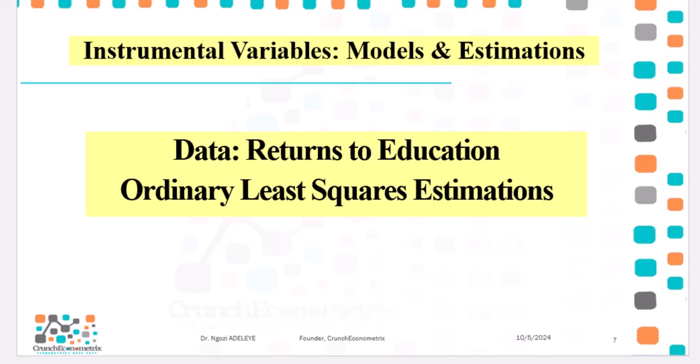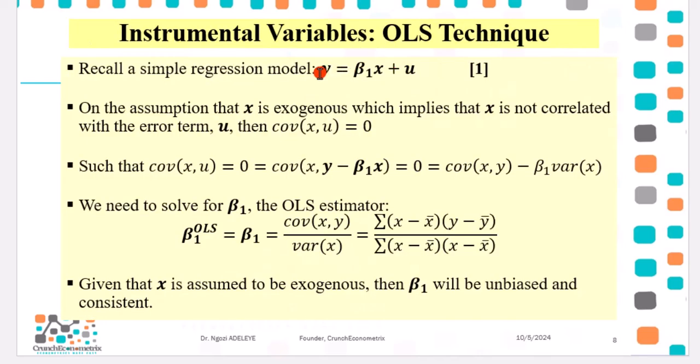So we are now going to begin estimations using the ordinary least squares approach. Still referring you to the underlying model where Y is a function of X. Remember, we are using only a bivariate model just to keep it simple. Firstly, we are going to assume that X is exogenous, which implies that X is not correlated with the error term, such that the covariance between X and U equals zero.